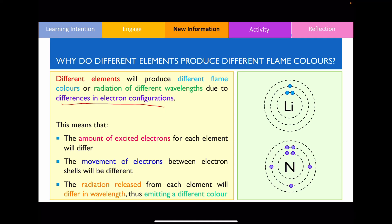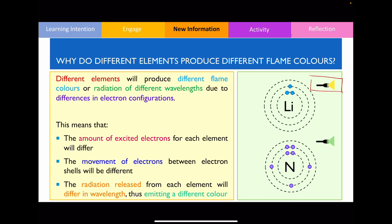I'm going to illustrate what I mean with the example on the right-hand side. I've got the Bohr diagram of both lithium and nitrogen. If you expose both of these to an external flame source, their electrons become excited and move to a higher energy level. However, the electrons are unstable, so they release energy by returning back to the ground state. Because both elements differ in terms of the number of electrons or electron configurations, the energy released in each will have slightly different wavelengths, and as a result this contributes to differences in the flame colour observed.